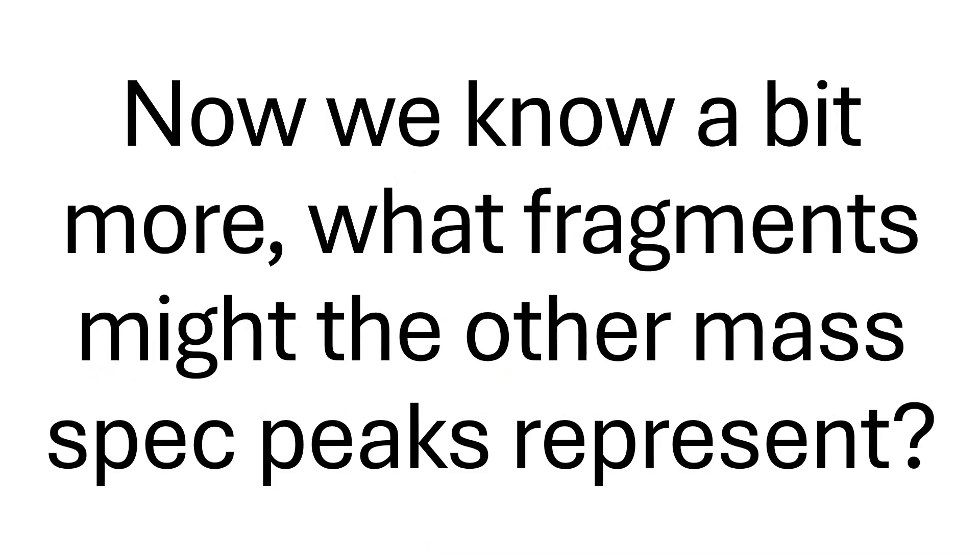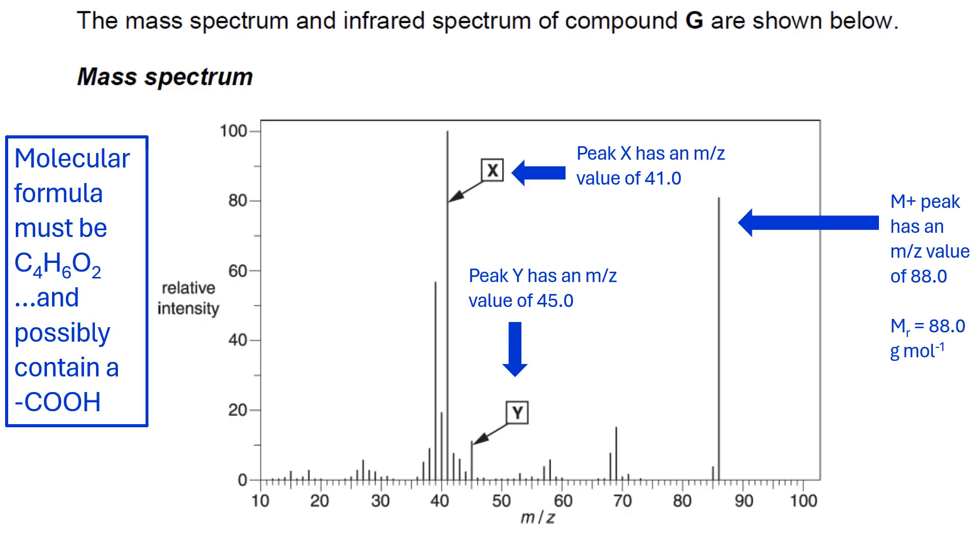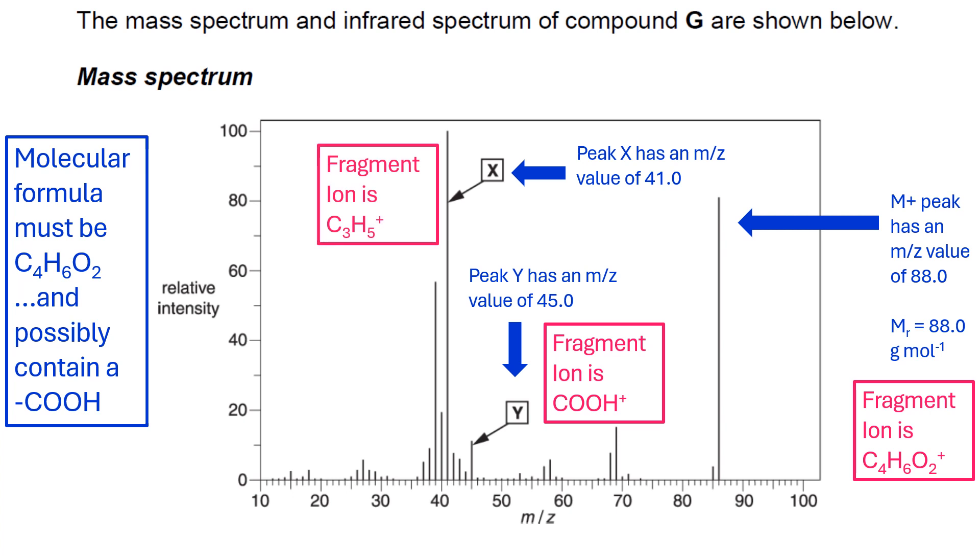Now we know a little bit more, we can look at the fragments from the mass spectrum that we didn't look at before. Each fragment can be given an identity based on the m/z value. We can give peak Y a COOH plus, and we can give peak X C3H5 plus, which is what's remaining behind after you take COOH away from C4H6O2.